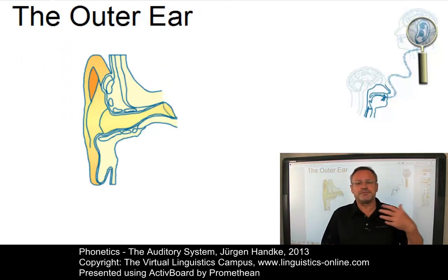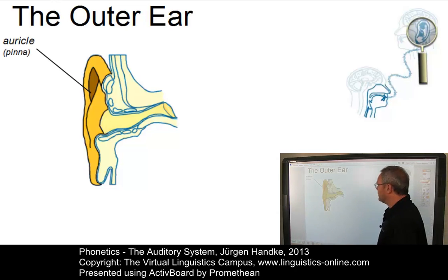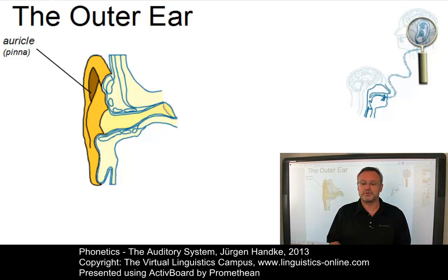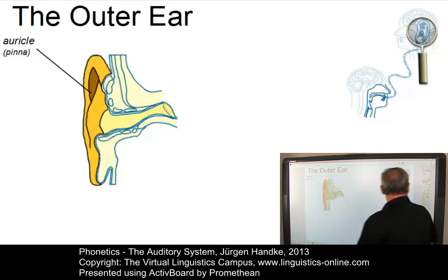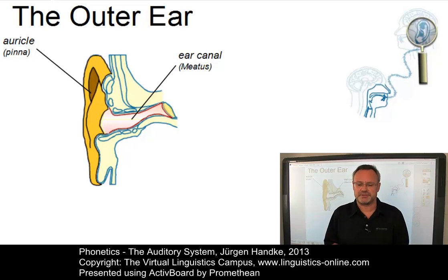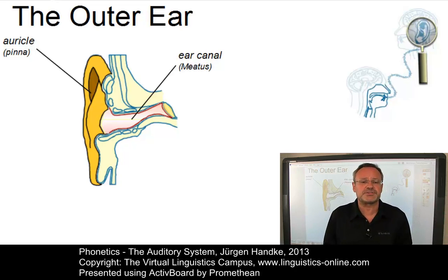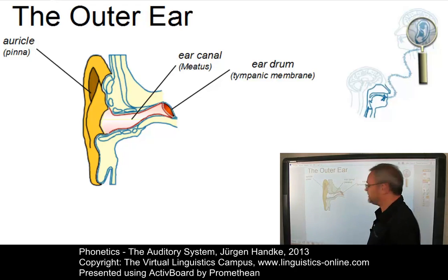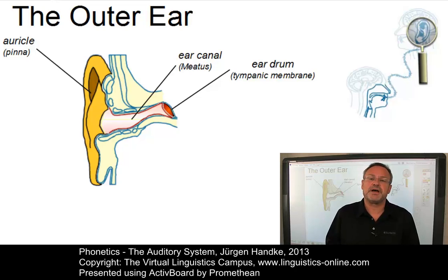The outer ear consists of the visible part, known as the auricle or pinna, and the interior part. The auricle collects sound waves and is also important in our ability to localize the source of a sound. Furthermore, it can modify incoming sound, particularly high frequencies. From here, the ear canal, a 2.5 cm long tube, leads to the eardrum. The main function of the ear canal is to filter out tiny substances that might approach the eardrum. Furthermore, it amplifies certain sound frequencies, especially those between 3,000 and 4,000 hertz, and it protects the eardrum, also called tympanic membrane, from changes in temperature as well as from damage.